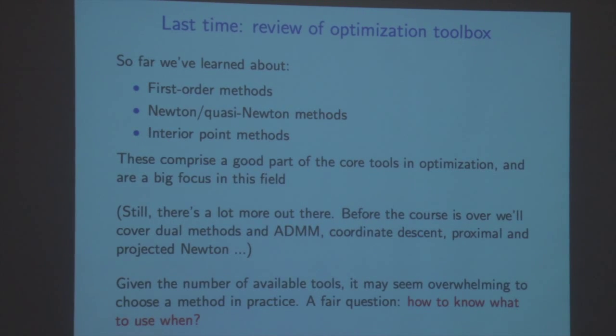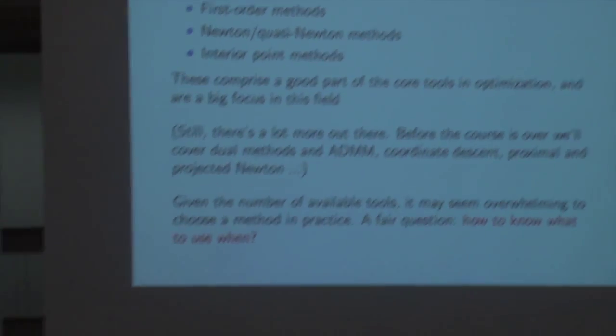These three broad classes of algorithms comprise a good part of the core tools in optimization. In most courses that aren't taught out of an ML department, these might be all that you learn. There's a lot more out there, and by the time the course is over we're going to cover advanced topics popular among the ML and stats communities — dual methods, the alternating direction method of multipliers, coordinate descent, proximal and projected Newton, and probably some advanced stochastic methods. Given the number of tools available, it may seem overwhelming to choose a method in practice, and a fair question is: how do you know what to use when?